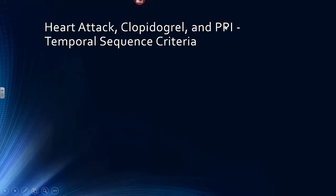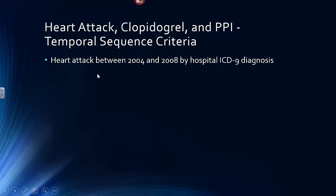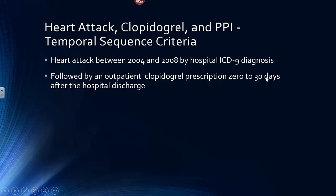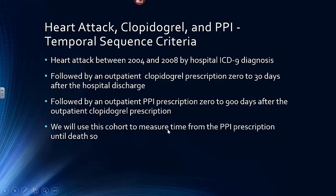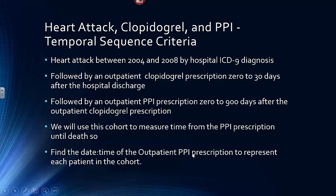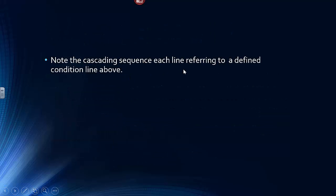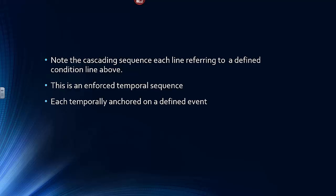In the other group, we have a heart attack, clopidogrel, and PPI. Its temporal sequence criteria are: heart attack between 2004 and 2008 by ICD-9 diagnosis, followed by an outpatient clopidogrel prescription 0 to 30 days after hospital discharge, followed by an outpatient PPI prescription 0 to 900 days after the outpatient clopidogrel prescription. Here you have clopidogrel and PPI being given in an overlapping fashion. Note again the cascading sequence, each line referring to the defined condition line above — an enforced temporal sequence, each temporally anchored on a defined event.